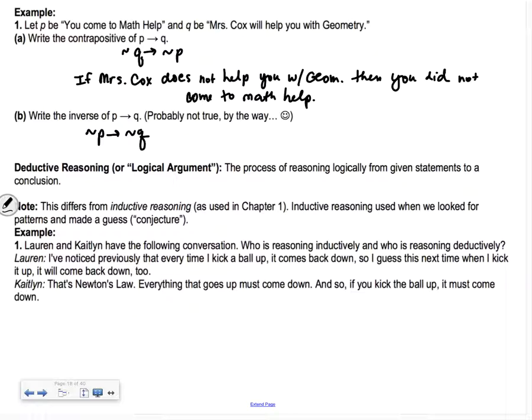Deductive reasoning is what we call a logical argument. This is the process of reasoning logically from given statements to make a conclusion. This is different than what we learned in chapter one, which was inductive reasoning. That's when we saw a pattern like one, four, seven, ten, and we can make a guess that the next number is 13. That was inductive reasoning.